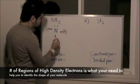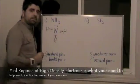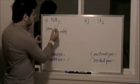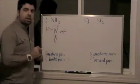One, two, three bonded pairs. How many unshared pairs? One unshared pair.